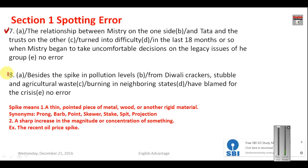Question number seven: 'The relationship between Mistry on the one side and Tata and the Trust on the other turned into difficulty in the last 18 months or so, when Mistry began to take uncomfortable decisions on the legacy issue of the group.' Their relationship turned difficult — they became very uncomfortable. In place of 'turned into difficulty' you have to say 'turned difficult'. If you want to use the noun 'difficulty' you have to say 'ran into difficulty'. Your answer will be C.